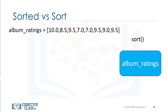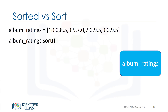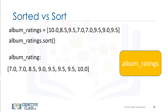Let's use the diagram to help illustrate the process. In this case, the rectangle represents the list album_ratings. When we apply the method sort to the list, the list album_ratings changes. Unlike the previous case, we see that the list album_ratings has changed. In this case, no new list is created.